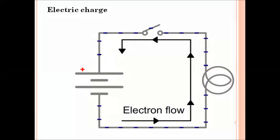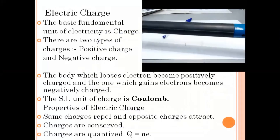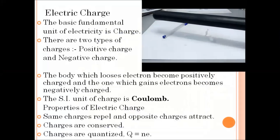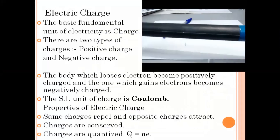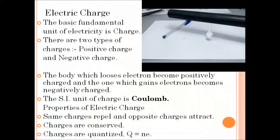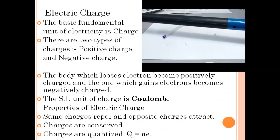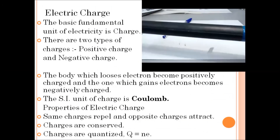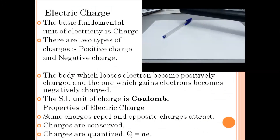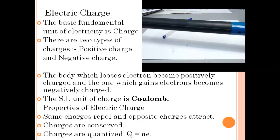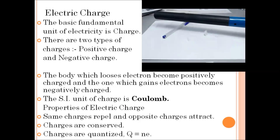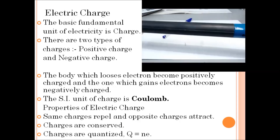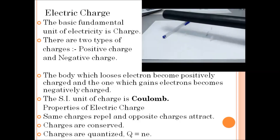Let us discuss electric charge in detail. In the animation given alongside, we can see that when a plastic rod is rubbed with a silk cloth, the plastic rod becomes charged and starts attracting small pieces of paper. This is how we can create electric charge.